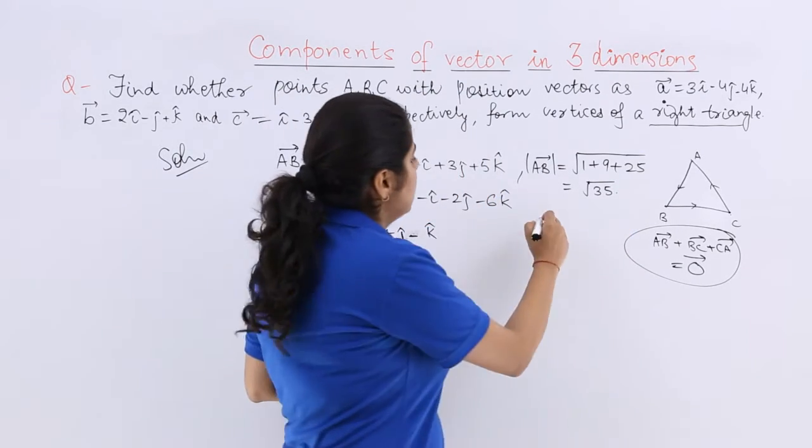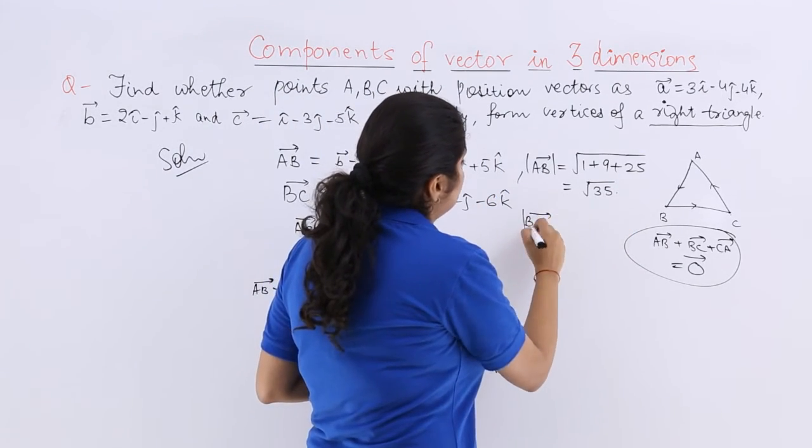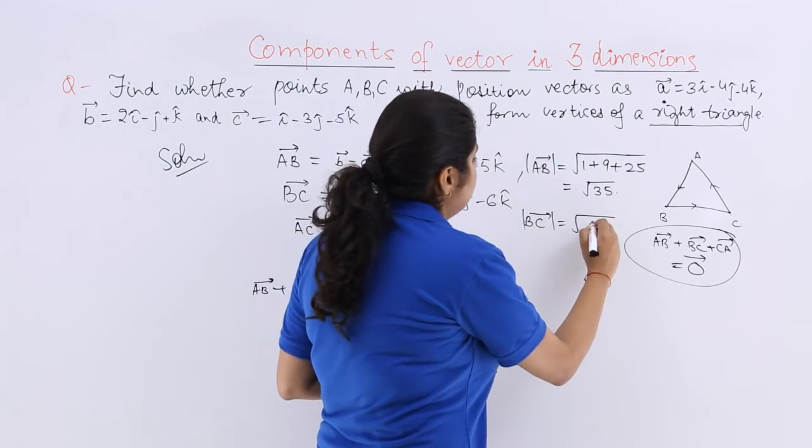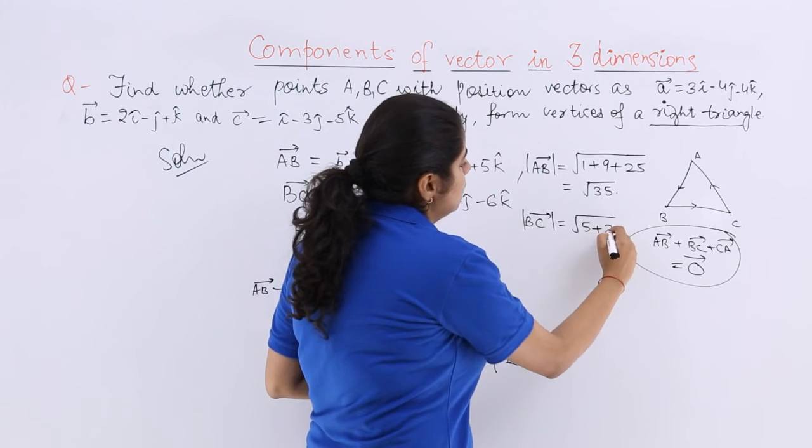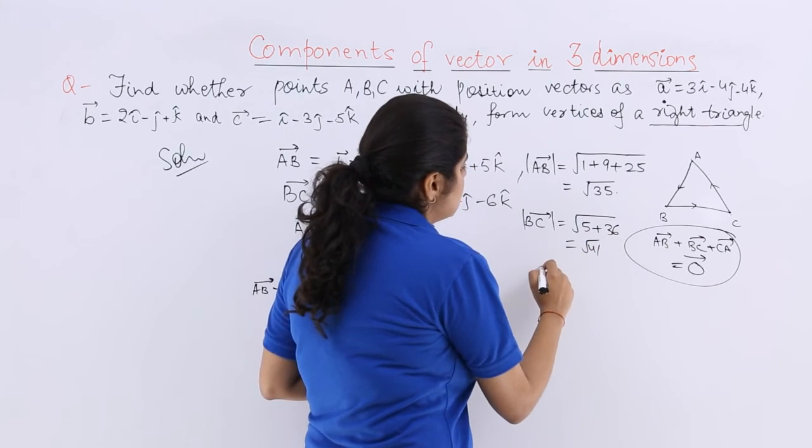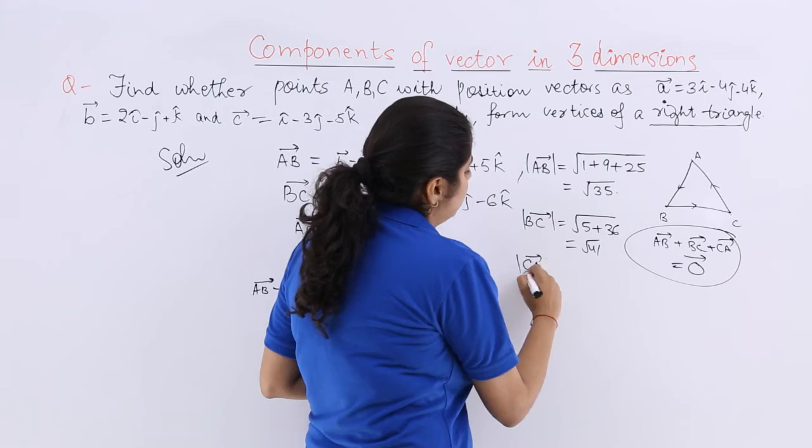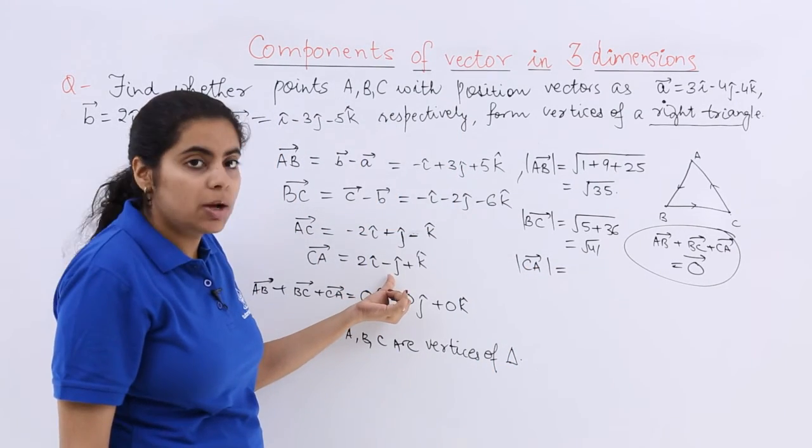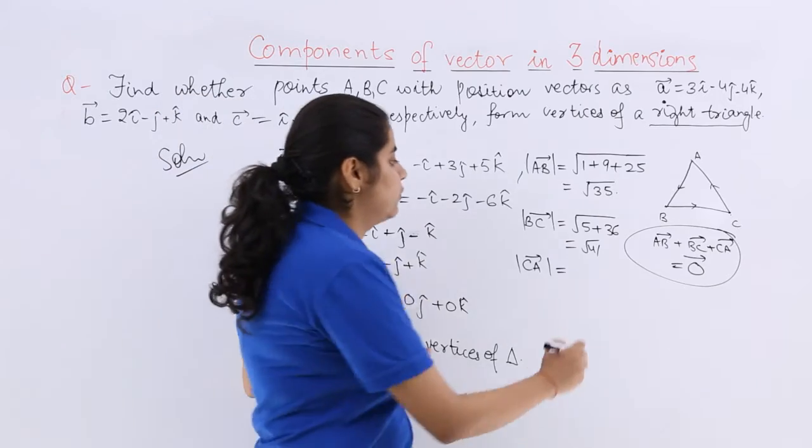What about BC? BC magnitude is under root 1 plus 4 which is root 5, plus root 36 which is root 41. Last but not the least I have to talk about magnitude of CA. What is the magnitude of CA? 4 plus 1 which is 5, plus 1 which is 6.